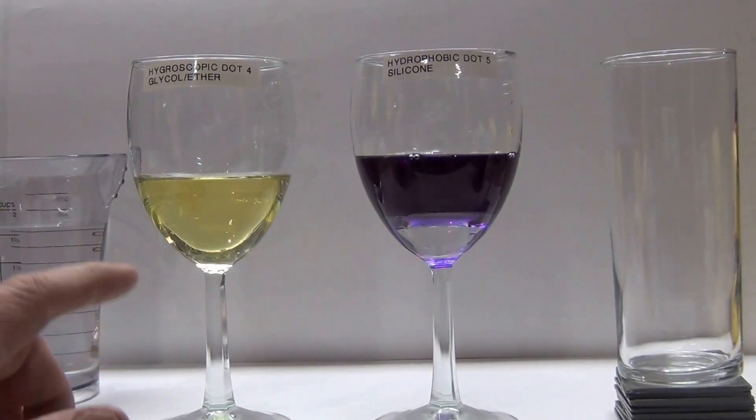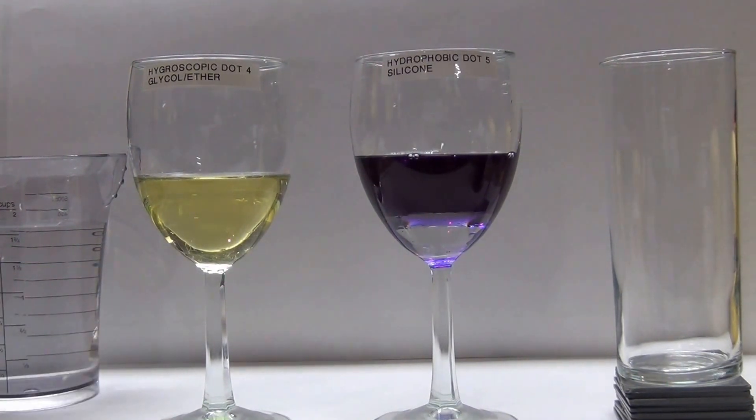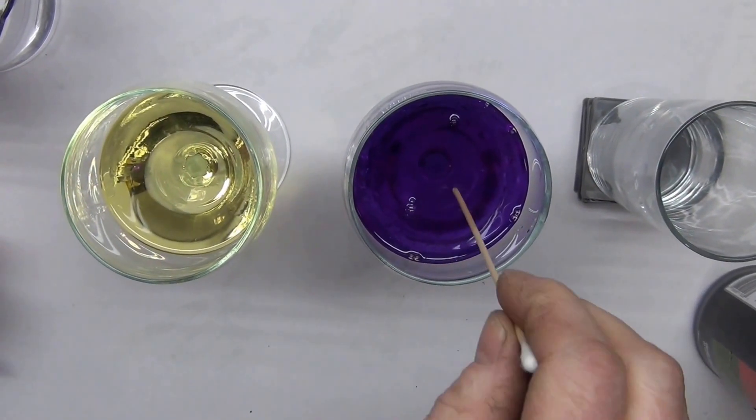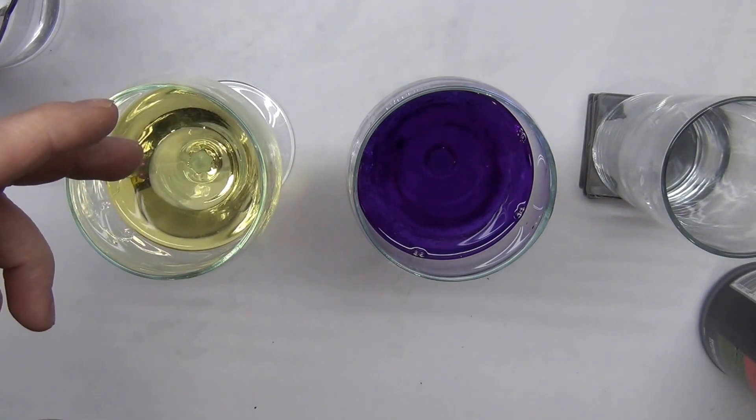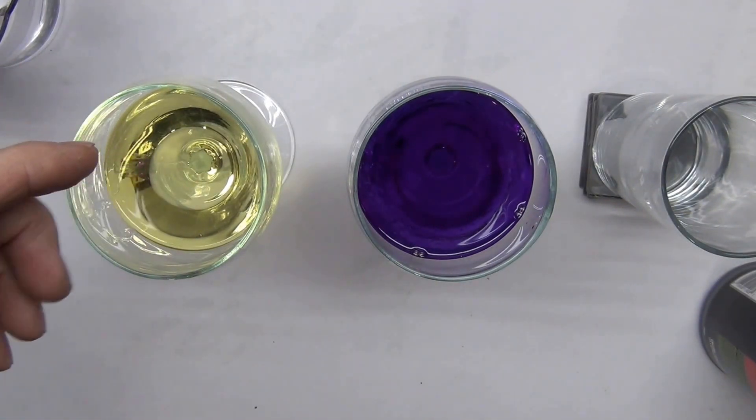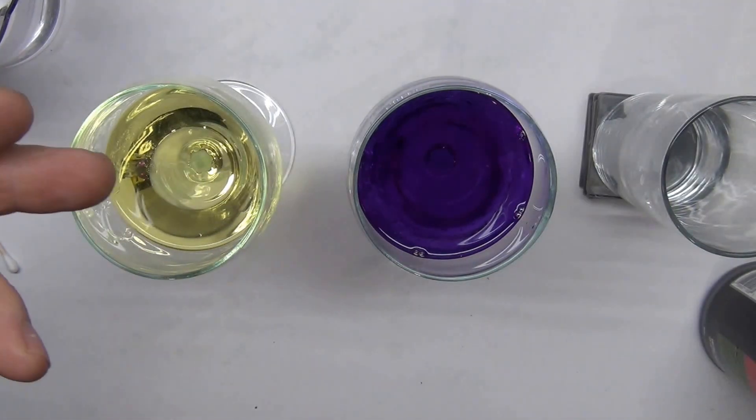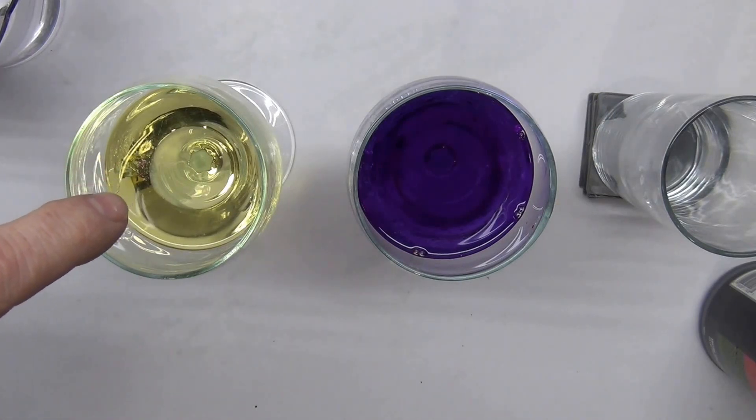Looking at it from above, you can't really see that the water's in there. It's important that if you have DOT 3, 4, or 5.1, you do change your brake fluid periodically. You want to change your brake fluid about every three to five years if it's DOT 3, DOT 4, or DOT 5.1. They're all made of the same kind of ingredients—that's glycol ether compounds.